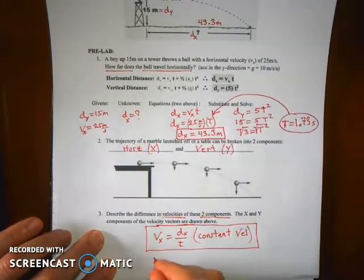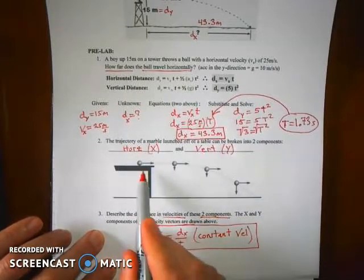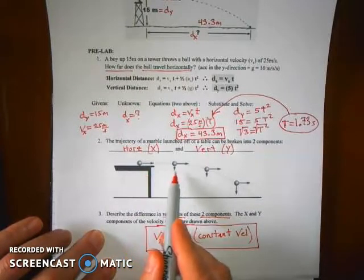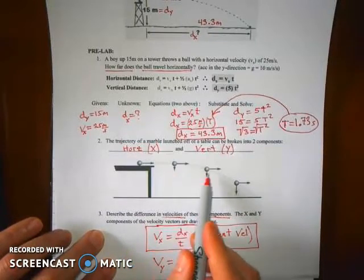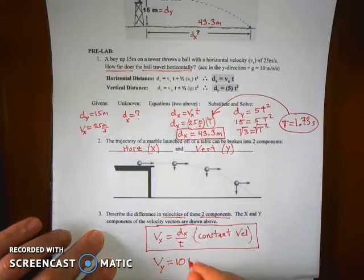But in the y direction, it's accelerating. And so the velocity is changing. It's like there's zero y velocity here. Then one second later, it speeds up to 10 meters per second, then 20 meters per second, then 30 meters per second. The y component's getting bigger and bigger and bigger because it's accelerating due to gravity at a rate of 10 meters per second squared.